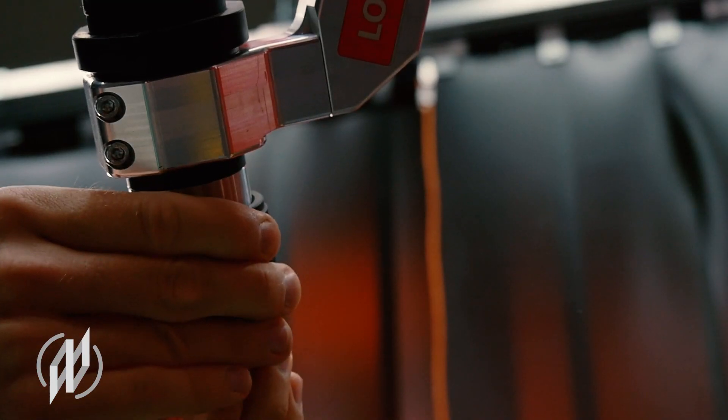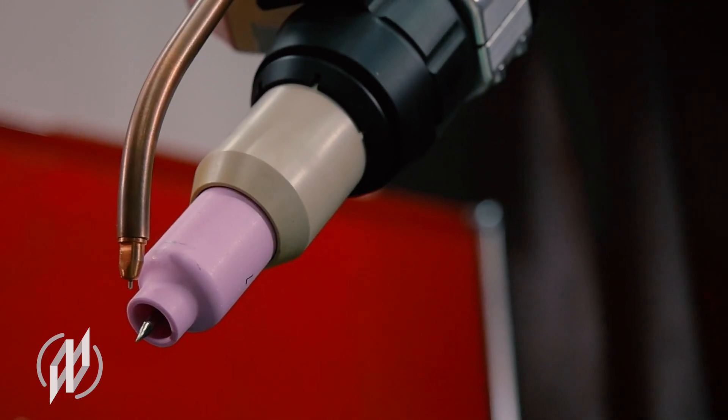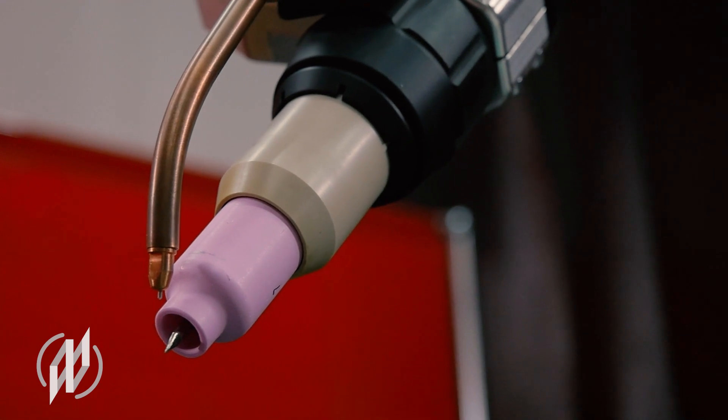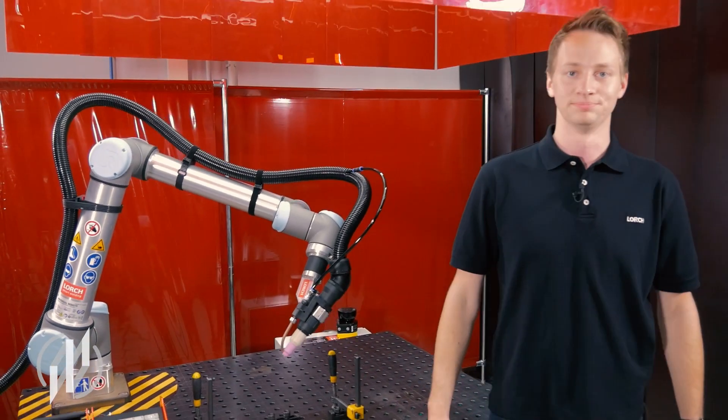For an extremely fast torch change, a second torch body can also be placed on the bearing. This enables a TCP accurate change of the torch within approximately 5 seconds. That's how easy it is.